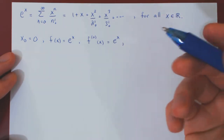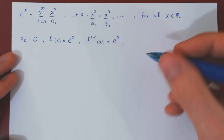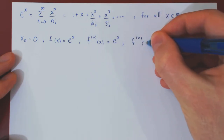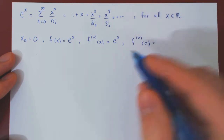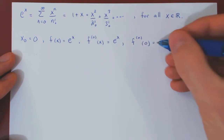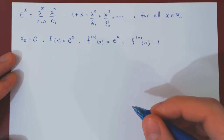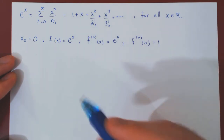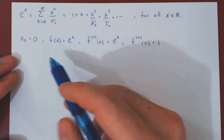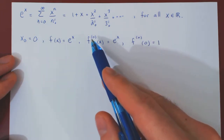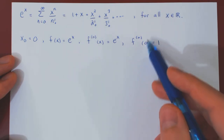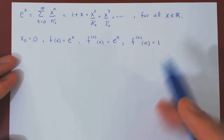Since we're going to have the Taylor series centered at 0, we will be interested in the n-th derivative of the function at 0. For any choice of n, this is e to the 0, which is simply 1. So all the conditions are met: the function e to the x is infinitely differentiable around 0, all of its higher derivatives exist, and at the center they are all equal to 1.